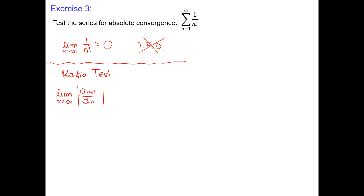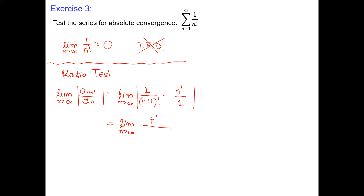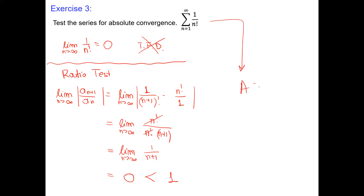We compute the limit of |a_{n+1}/a_n| at infinity. a_{n+1} = 1/(n+1)!, and dividing by 1/n! means multiplying by the reciprocal. Rewriting (n+1)! = n! · (n+1), the n! cancels, leaving 1/(n+1). The limit of 1/(n+1) as n→∞ is 0. Since 0 < 1, this series is absolutely convergent by the ratio test.